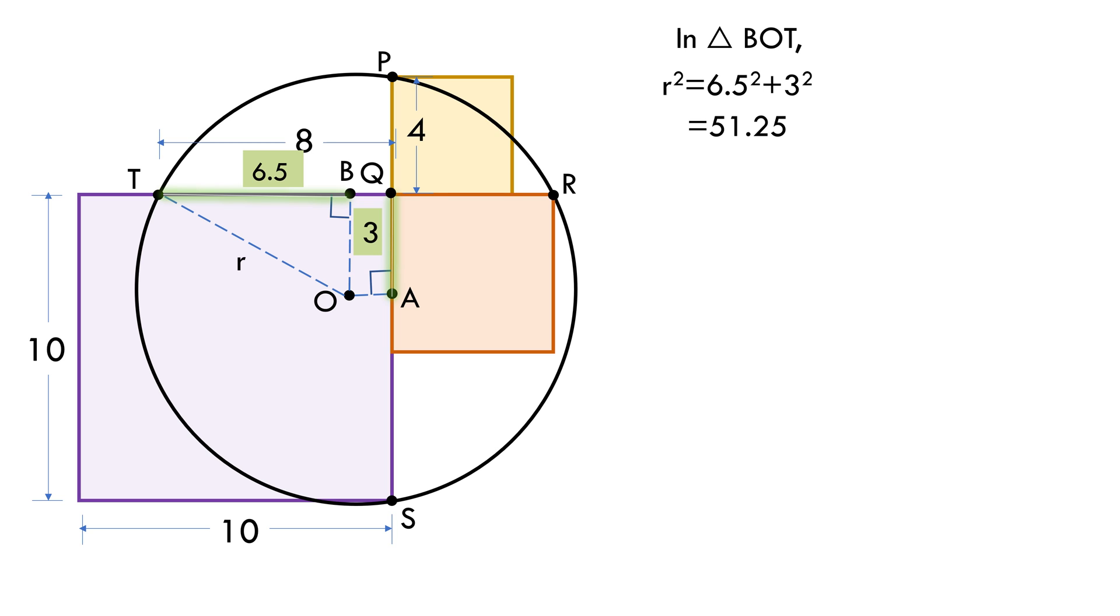Now that radius of the circle is known, area of the circle equals pi r squared equals 161 square units.